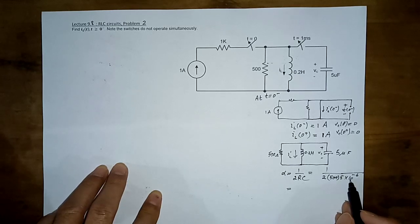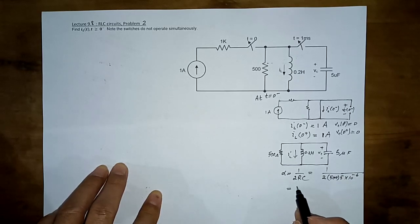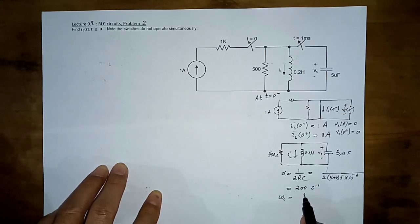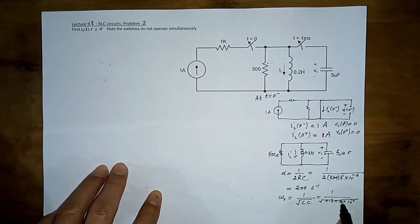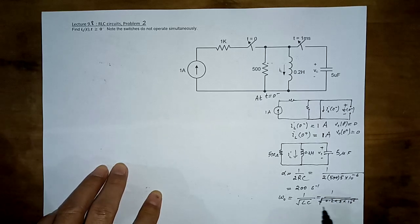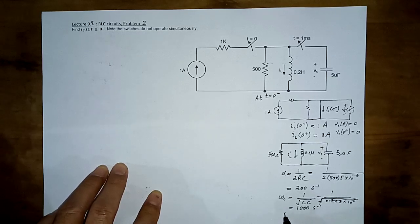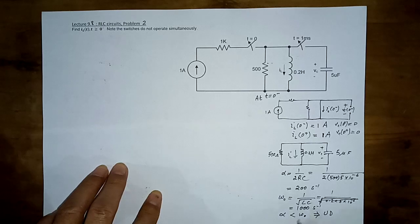1000 × 10⁻⁶ = 10⁻³, and 1 over 10⁻³ gives 10³ in the numerator, divided by 5 gives alpha = 200 Nepers per second. Omega naught is 1 over √(LC) = 1 over √(0.2 × 5×10⁻⁶) = 1 over √(10⁻⁶) = 1 over 10⁻³ = 1000 radians per second. Since alpha (200) is less than omega naught (1000), the response is underdamped.